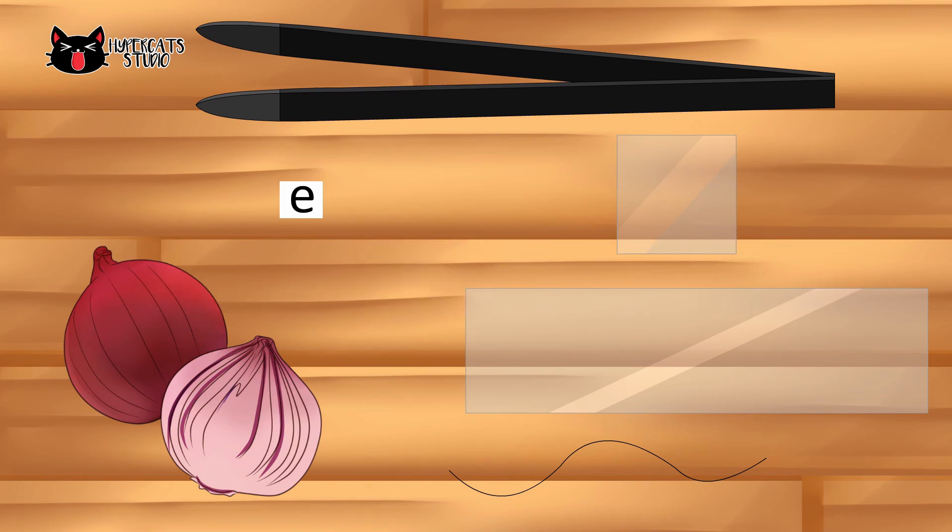We have to prepare these materials first: cover slips, slides, specimens like onion, hair and a cutout of letter E from a newspaper, tweezers, and lastly water.